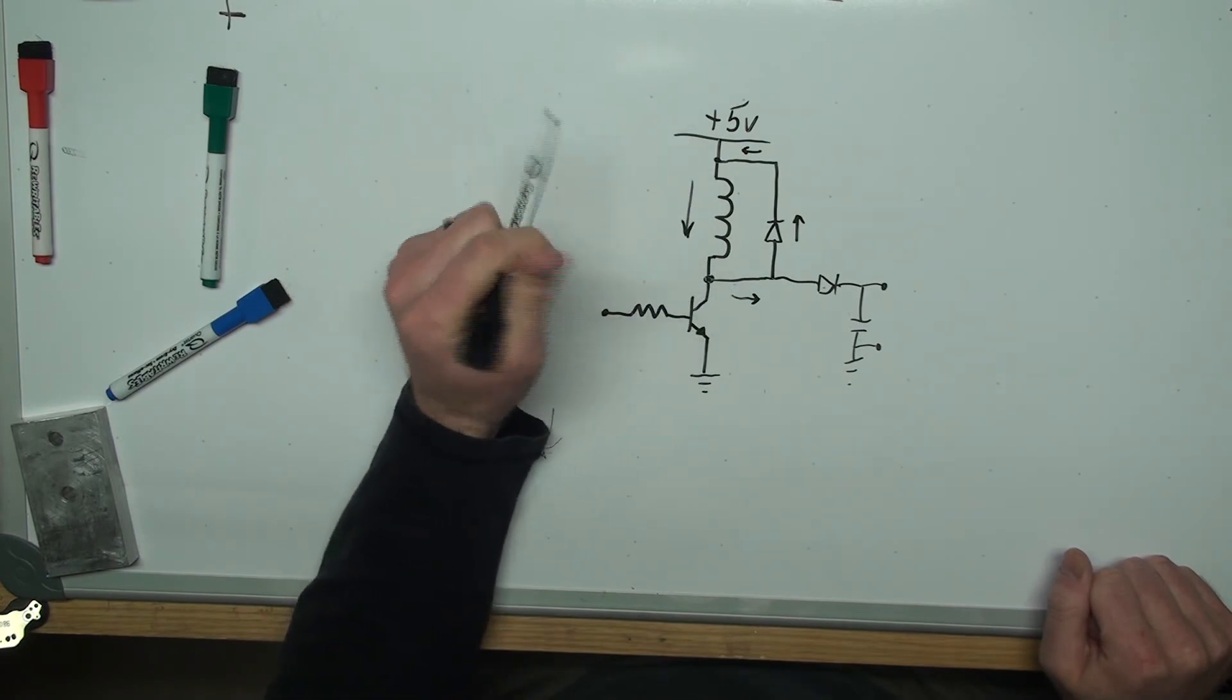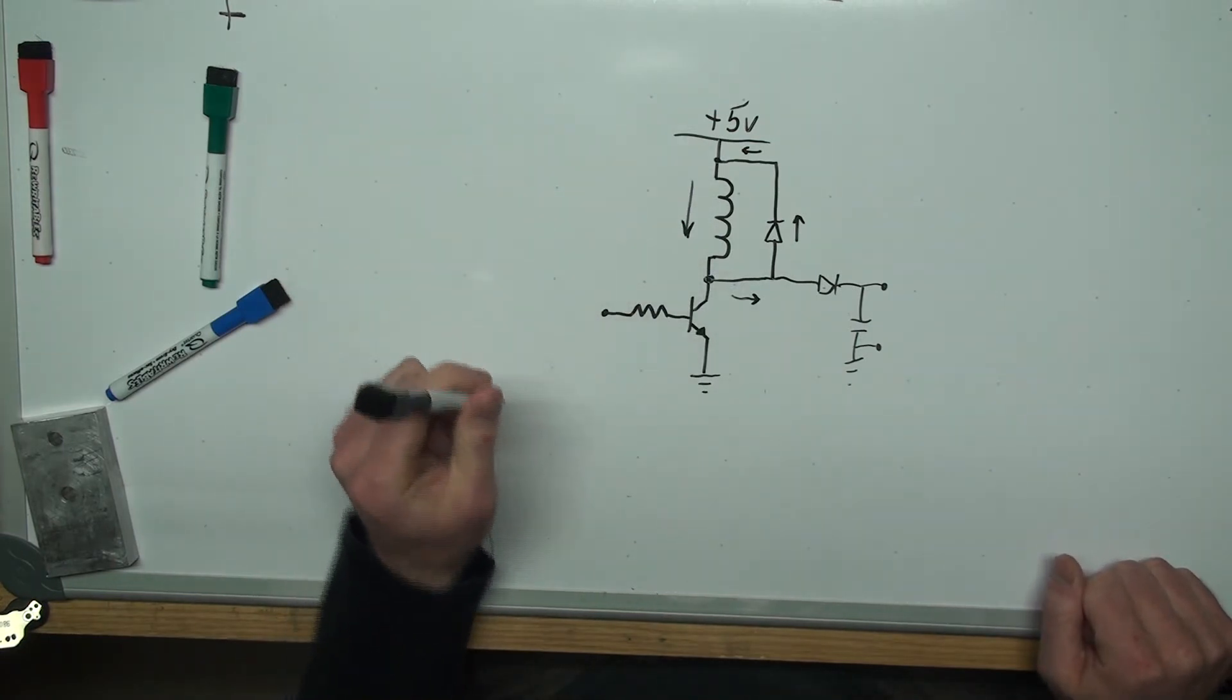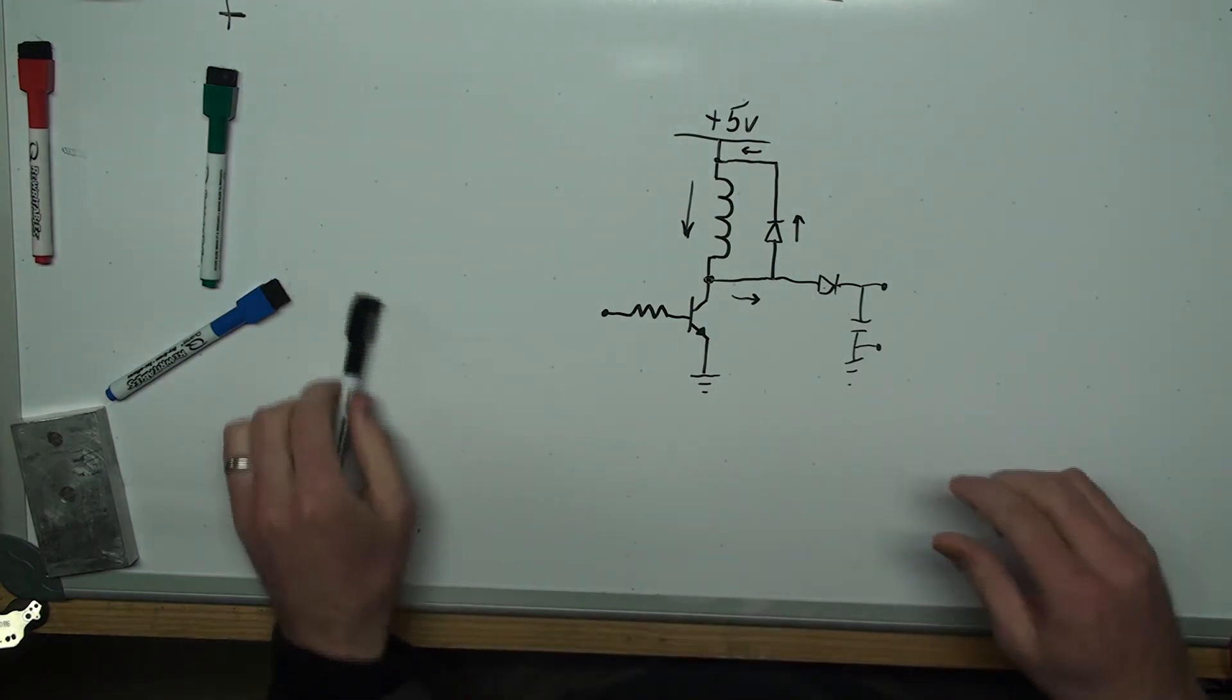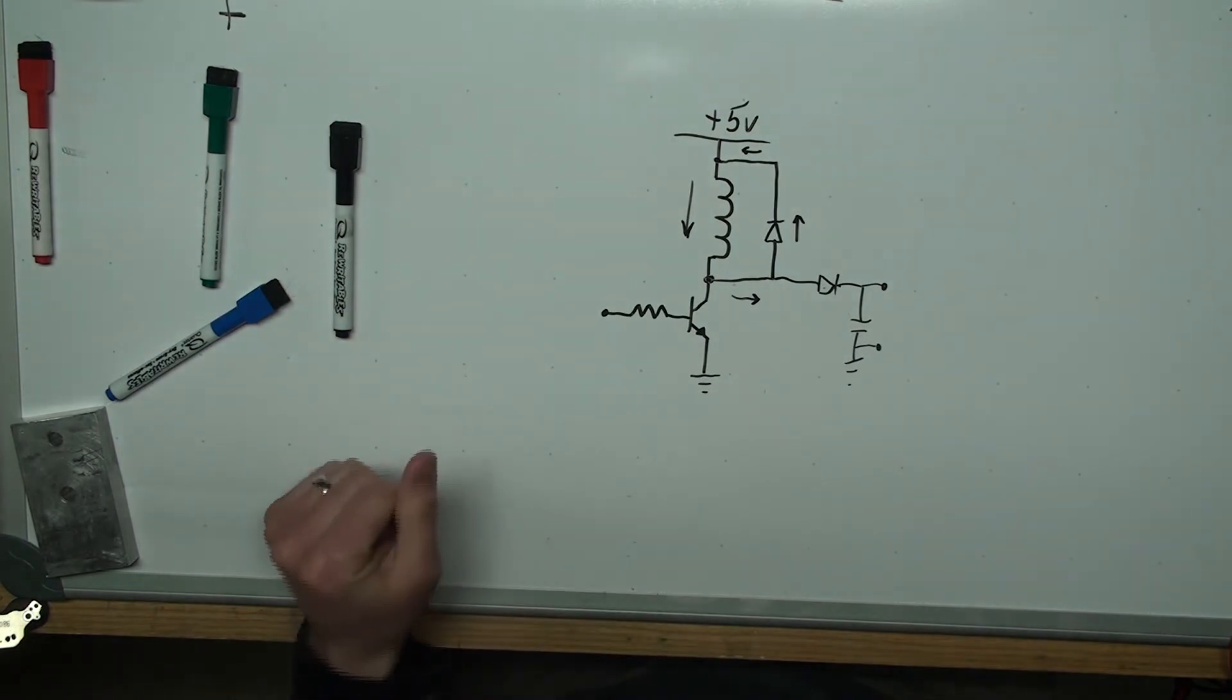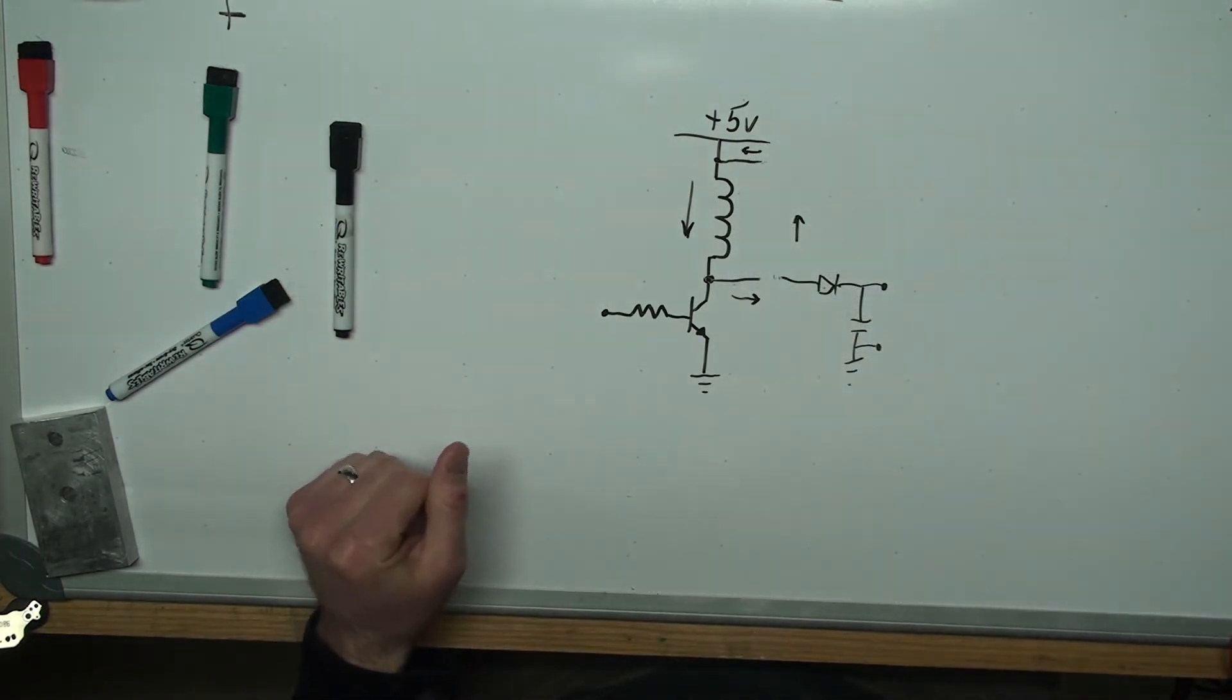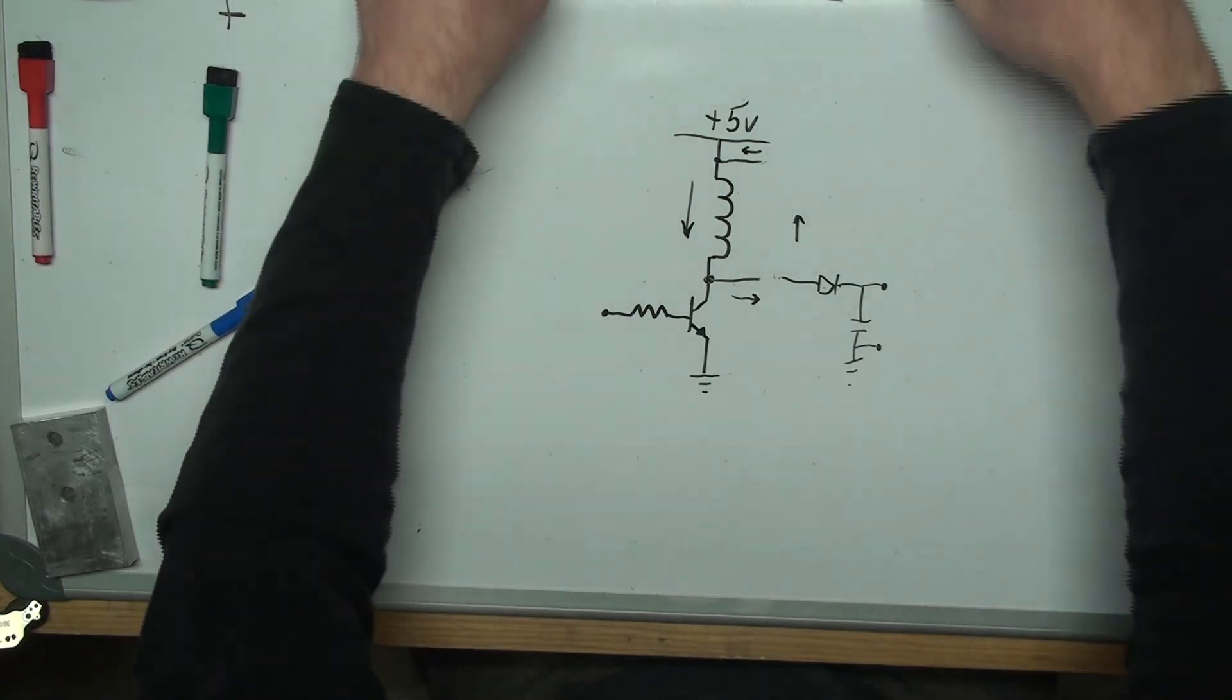So I want to bring down that circuit, and remember it will be missing this freewheeling diode here, and we'll see what the voltages are.